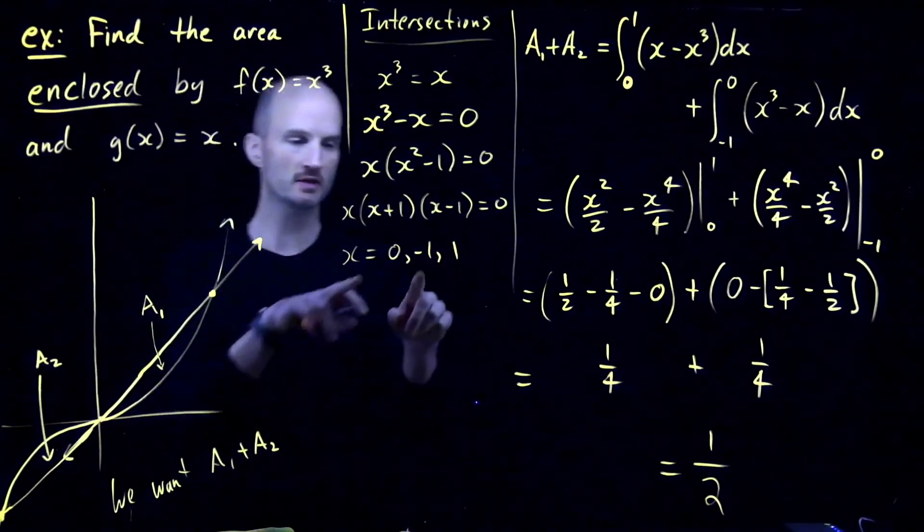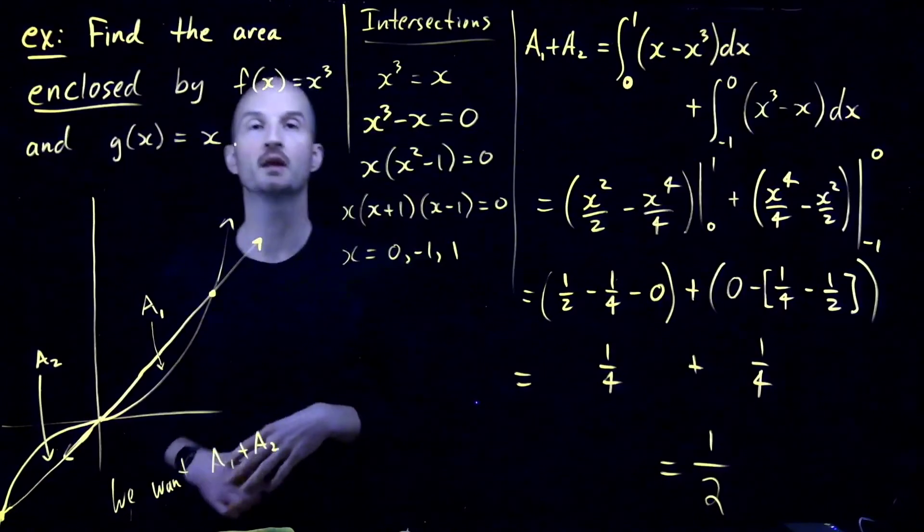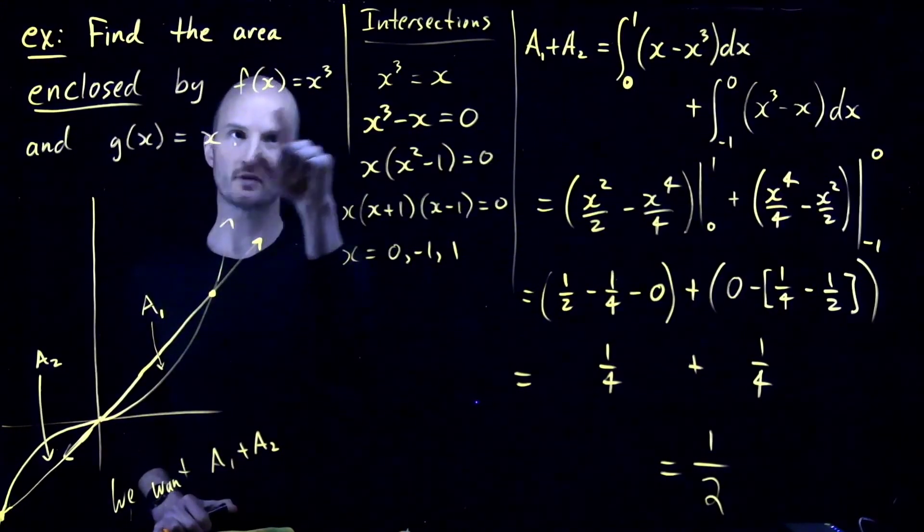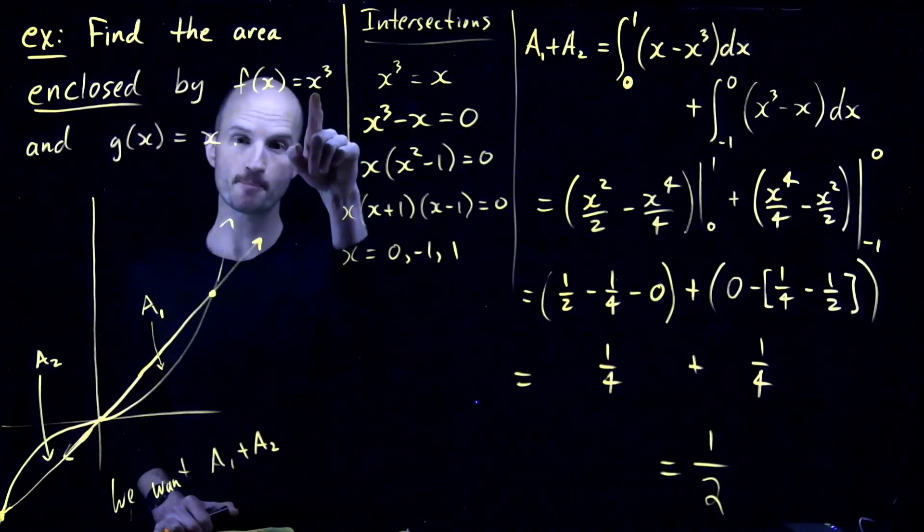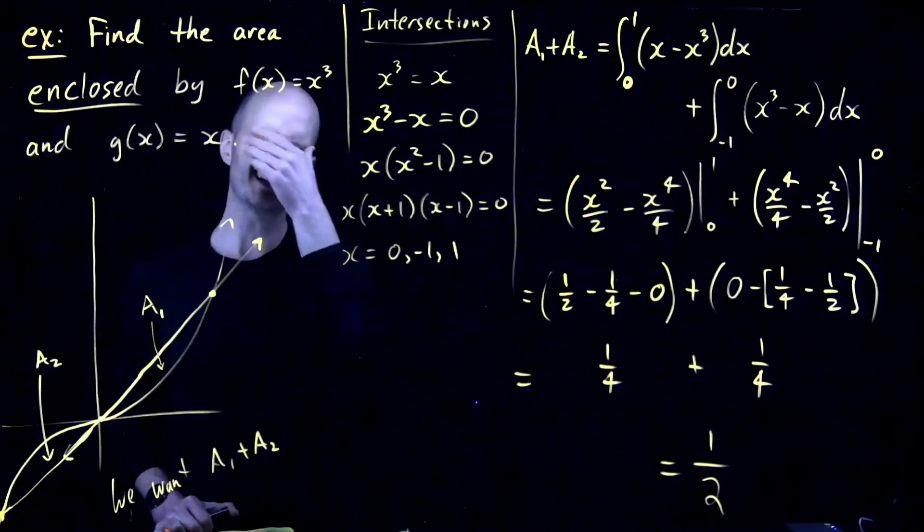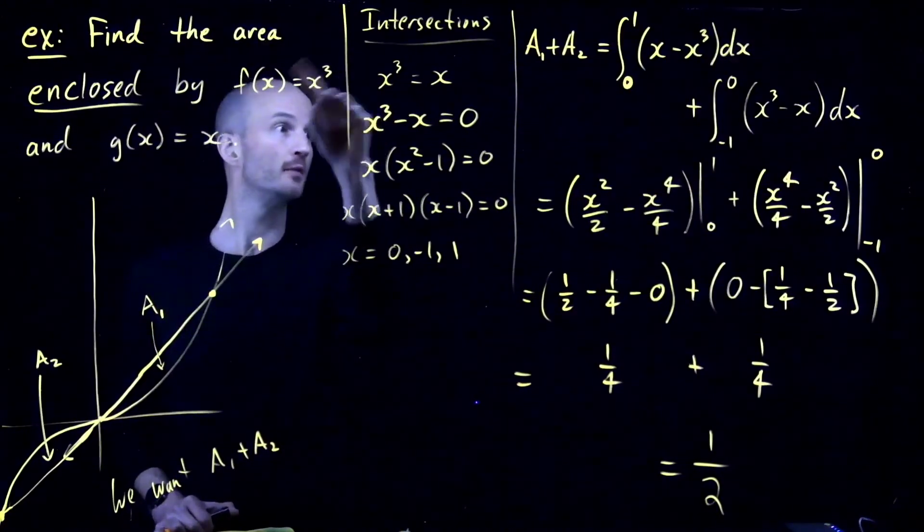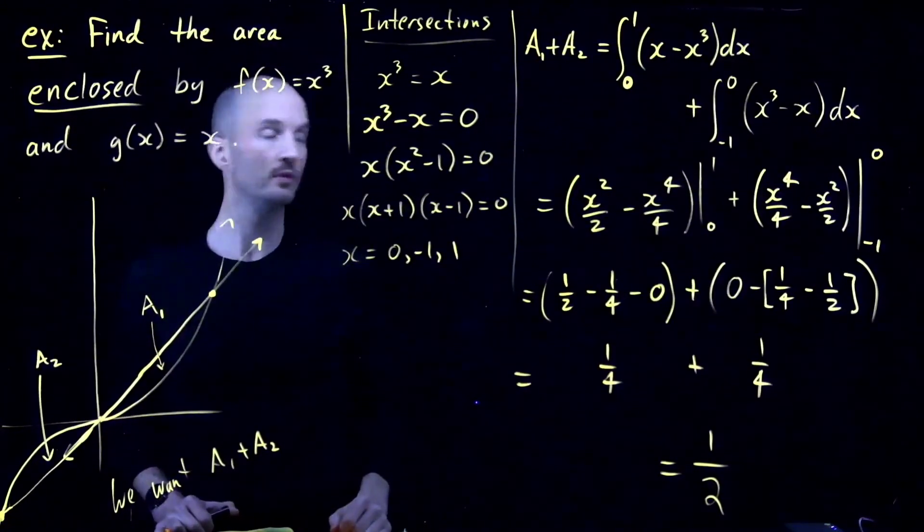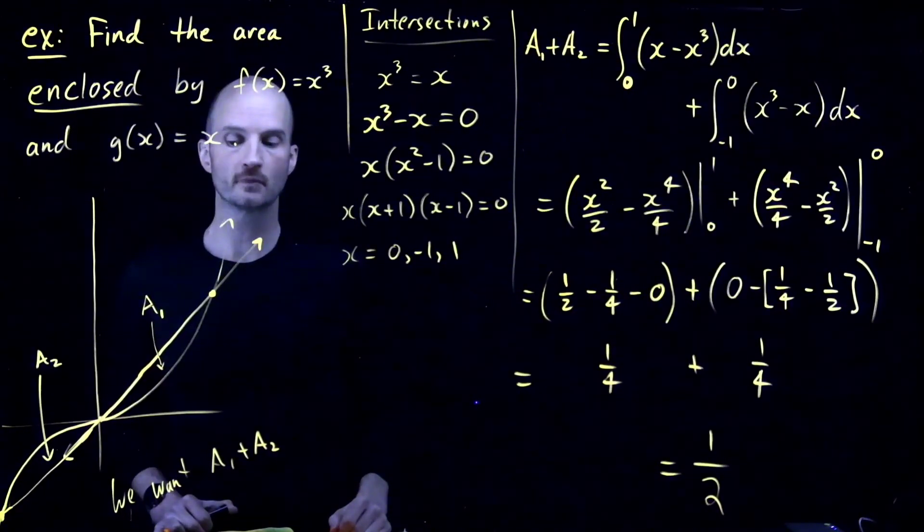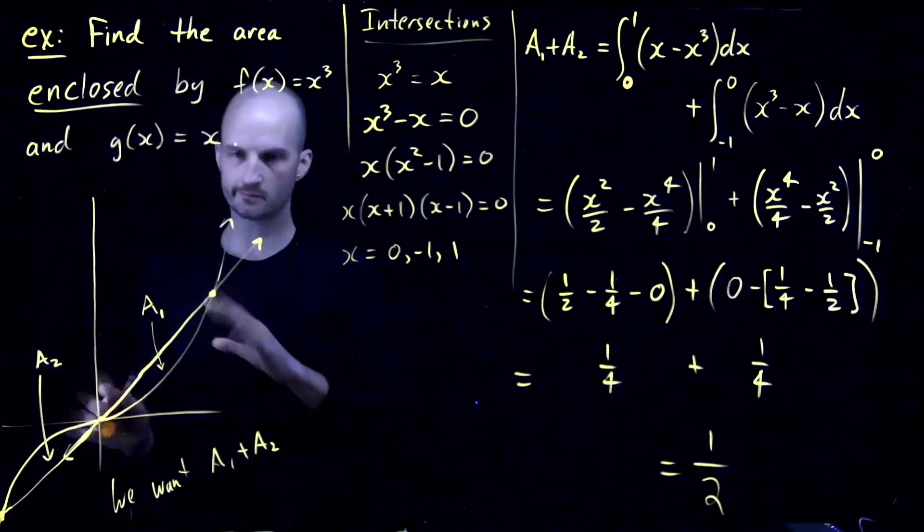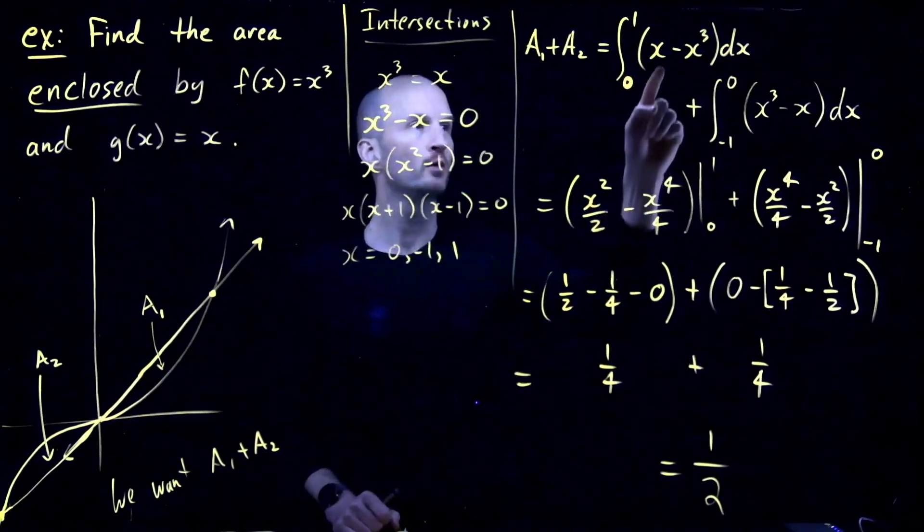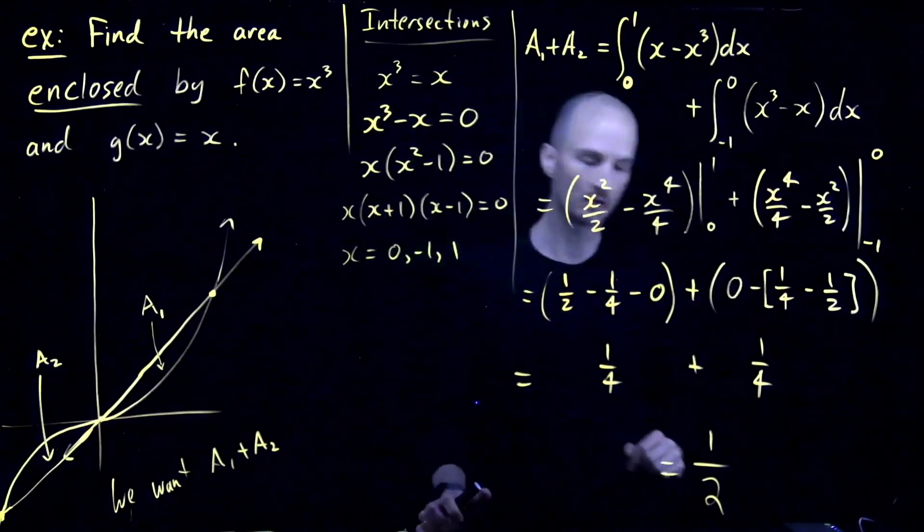Who is the bigger function? This guy or this guy? Well, I can just plug in, say, negative a half. If I plug in negative a half here, I get negative a half. If I plug in negative a half here, I get negative 1 eighth. Telling me that this guy's bigger between 0, between minus 1 and 0. So in some sense, you don't need the full picture. You can use test points to decide who is the upper function and who is the lower function.